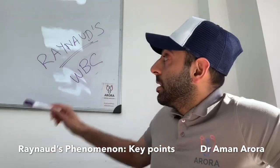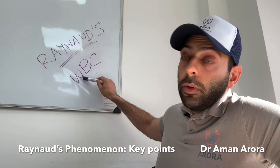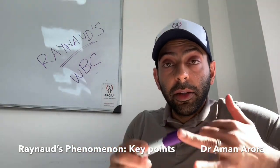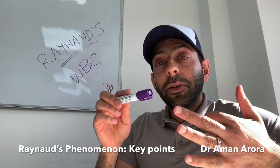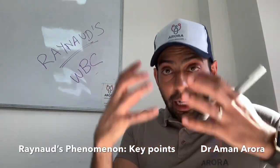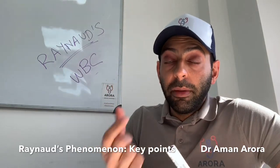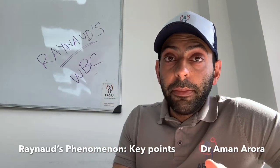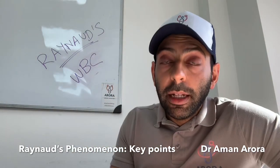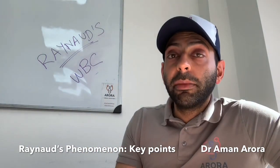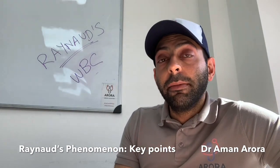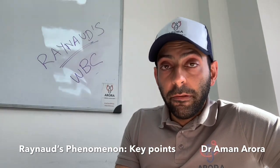Remember these key points if you get a classic story that looks like Raynaud's phenomenon. The three key colour changes are WBC — white, blue, crimson — from pallor, to cyanosis, then the erythematous stage. Remember it can affect the tips of the fingers most commonly, but really any extremity. Key triggers include cold, but also emotion. Think about simple lifestyle changes and think about nifedipine as the key medication to remember for an exam.